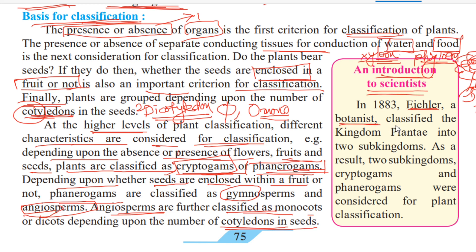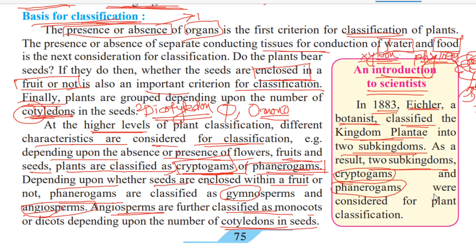In 1883, plant kingdoms were classified into two sub-kingdoms. As a result, two sub-kingdoms — Cryptogams and Phanerogams — were considered for plant classification, giving us the foundational two sub-kingdoms: Cryptogams and Phanerogams.